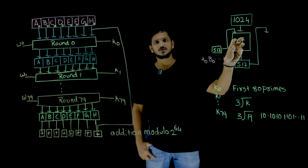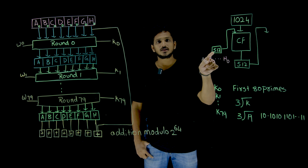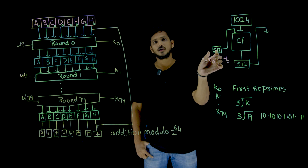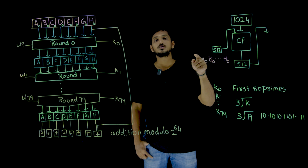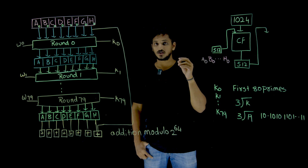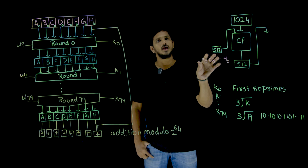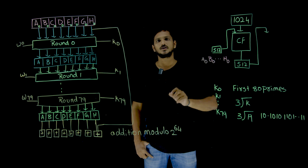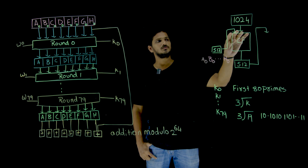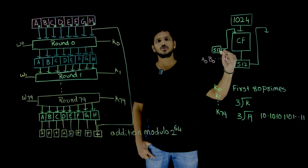For the first compression function, we need 512 bits as input. These 512 bits are generated based on a method we clearly discussed in our last class — we are generating some constants based on the square root method. These 512 bits are divided into words; each word is of size 64 bits, and those 64 bits we call A0, B0, C0 up to H0 — 8 words in total. A0 to H0 is given as input to the compression function, along with the 1024-bit actual message.